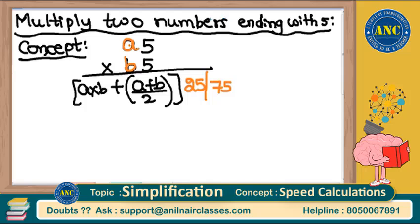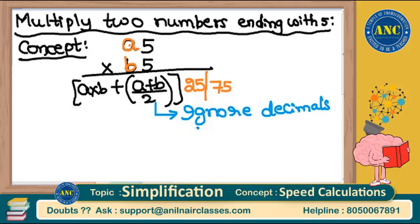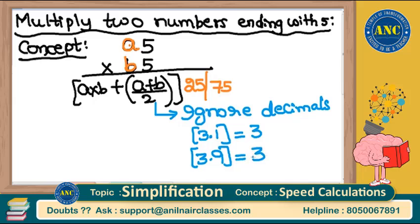The last two digits are 25 or 75 depending on a and b's nature. If you get any decimals in (a+b)/2, kindly ignore the decimals. For example, if you get 3.1, ignore the 0.1 and write 3. If you get 3.9, ignore 0.9 and write 3. Don't approximate 3.9 to 4 — ignore the decimal, not approximate it.